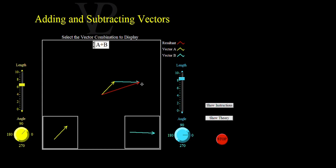It doesn't have to be two — you could have any number of displacements adding together in different directions and sizes to get you from start to finish. This resultant concept applies not just to displacements but to forces, velocities, accelerations, or any vector quantity — that is, a quantity that has both magnitude and direction.